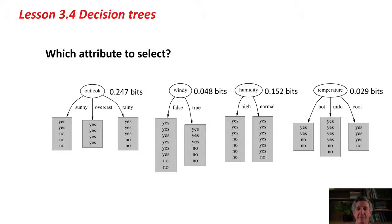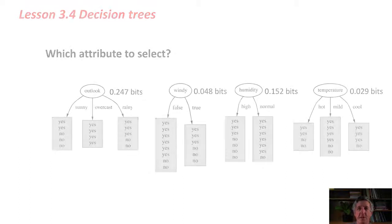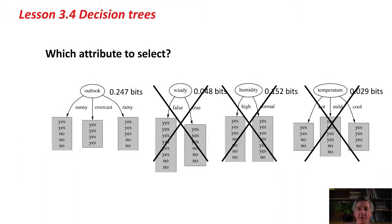You can see that knowing the value for windy gives you only 0.048 bits of information. Humidity is quite a bit better. The temperature is way down there at 0.029 bits. We're going to choose the attribute that gains the most bits of information, and that, in this case, is outlook.